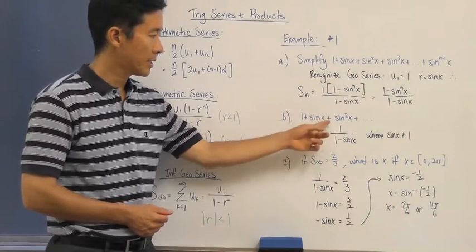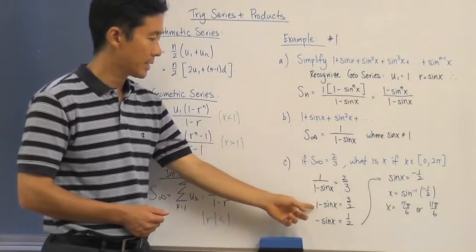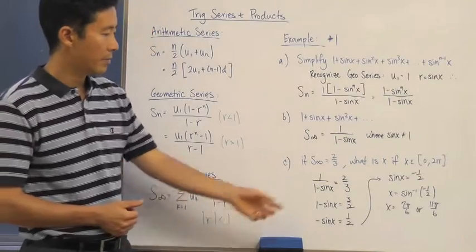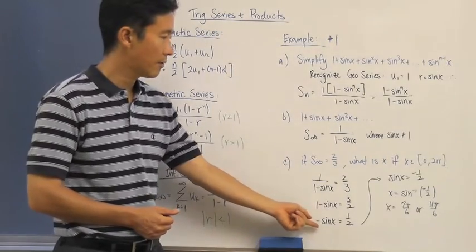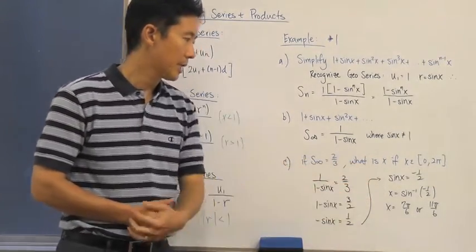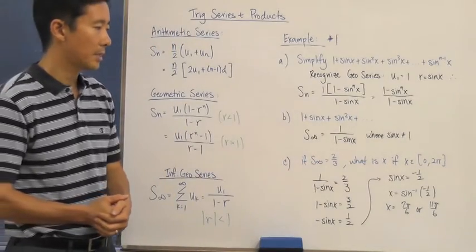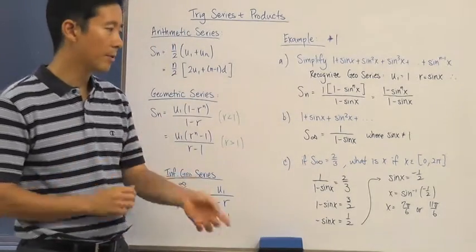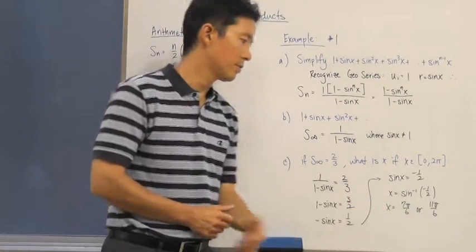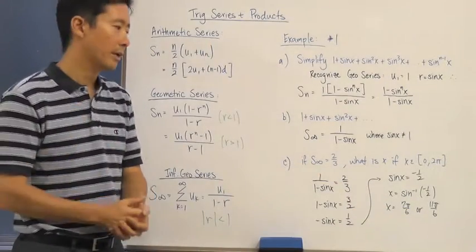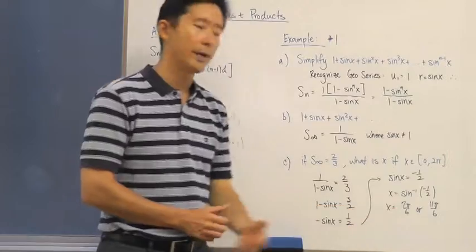Then we just go ahead and do a direct substitution for s of the infinite geometric series. That's 2 thirds, and we know that it's going to be equal to 1 over 1 minus sine x. We can go ahead and reciprocate both sides, solve for sine x. After that, take the inverse sine of both sides, and then go ahead and solve. And then just remember that you're always going to come up with two particular values. One value is going to be given to you by your calculator.